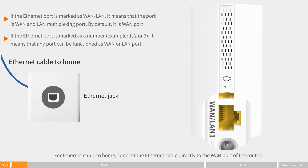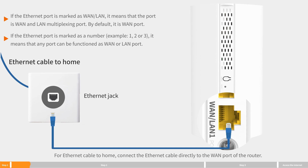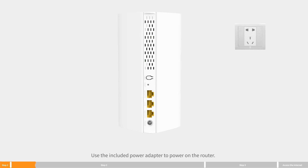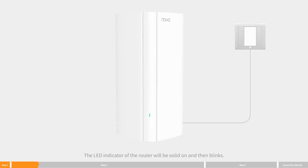For ethernet cable to home, connect the ethernet cable directly to the WAN port of the router. Use the included power adapter to power on the router. The LED indicator of the router will be solid on and then blink.